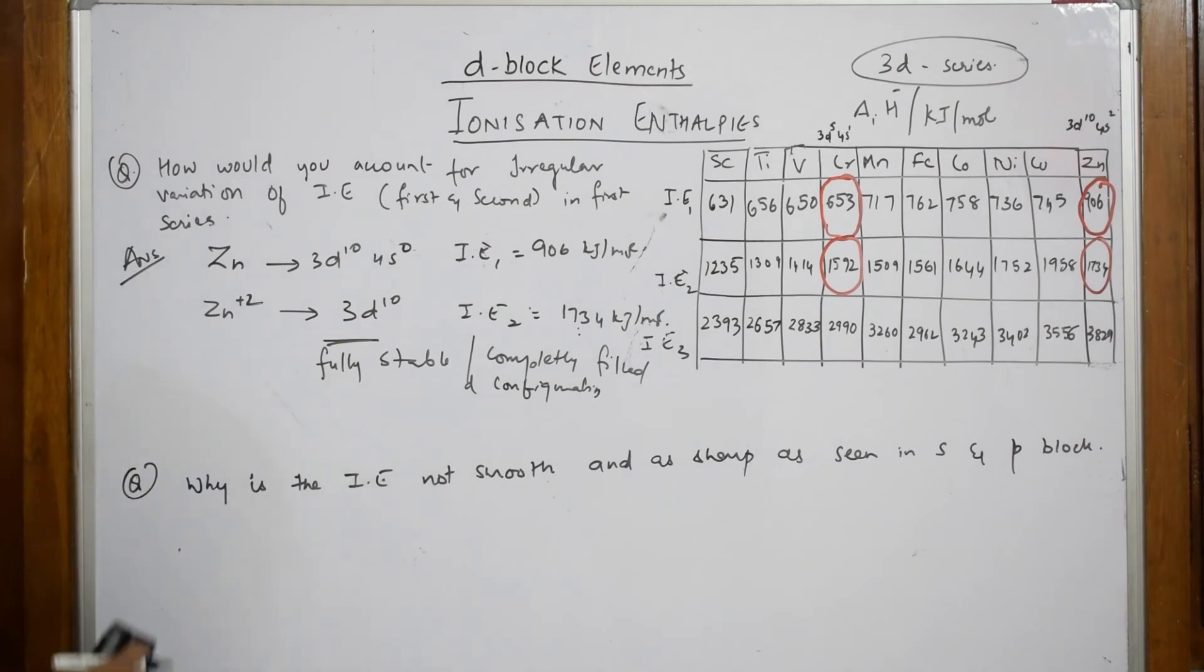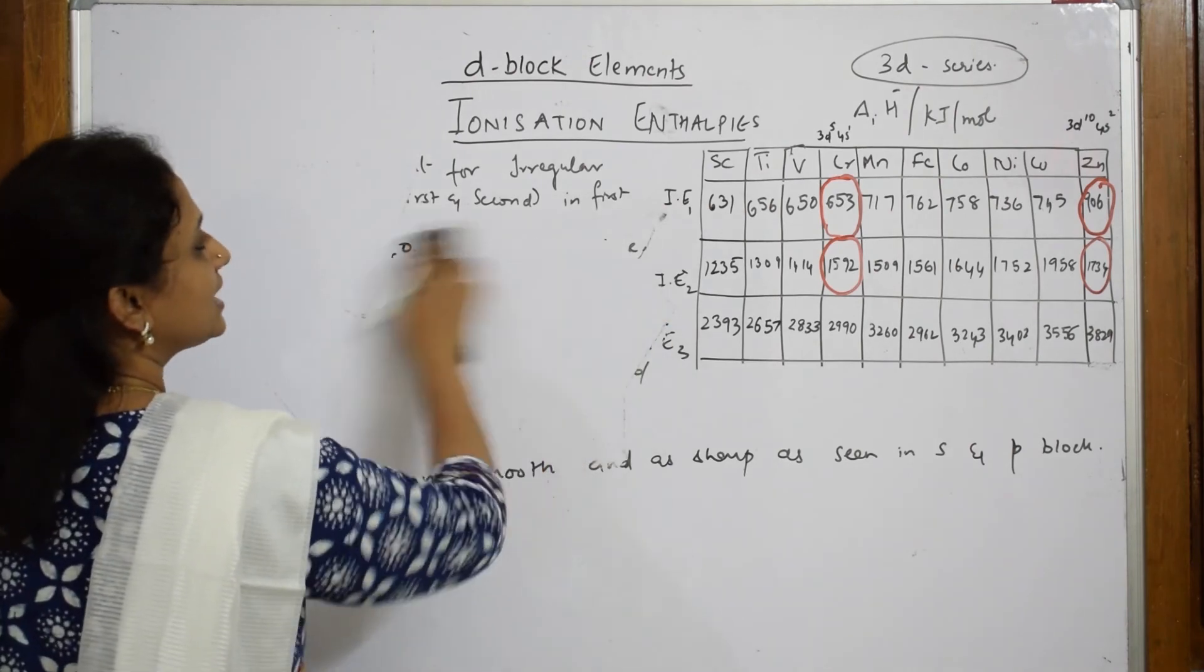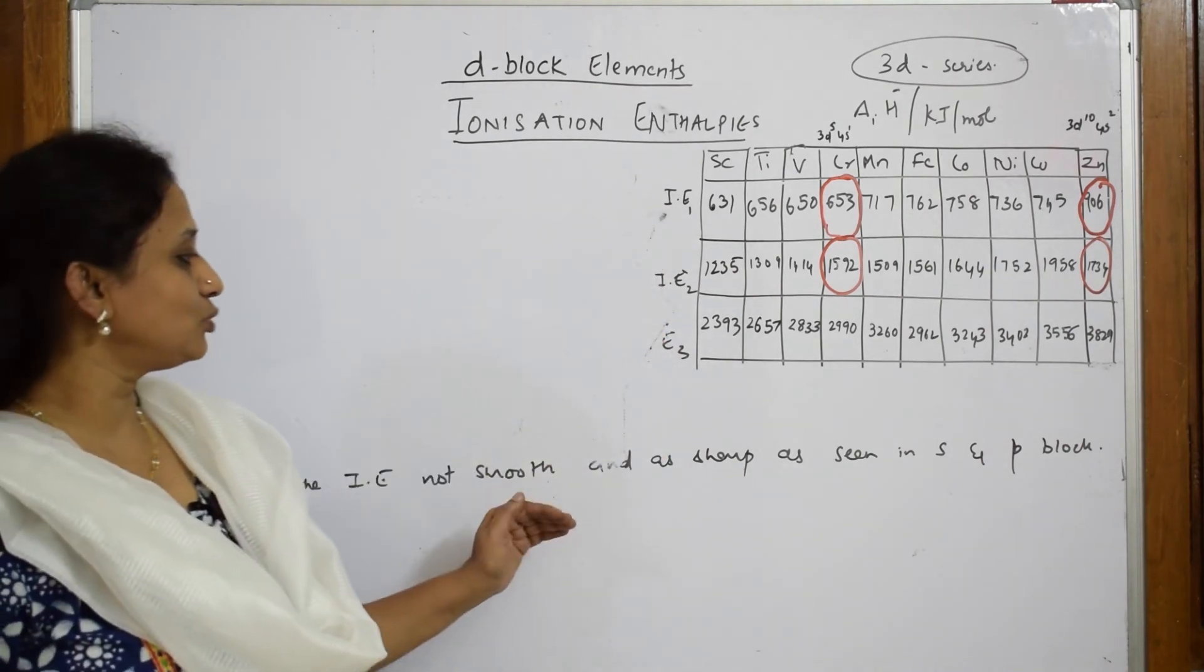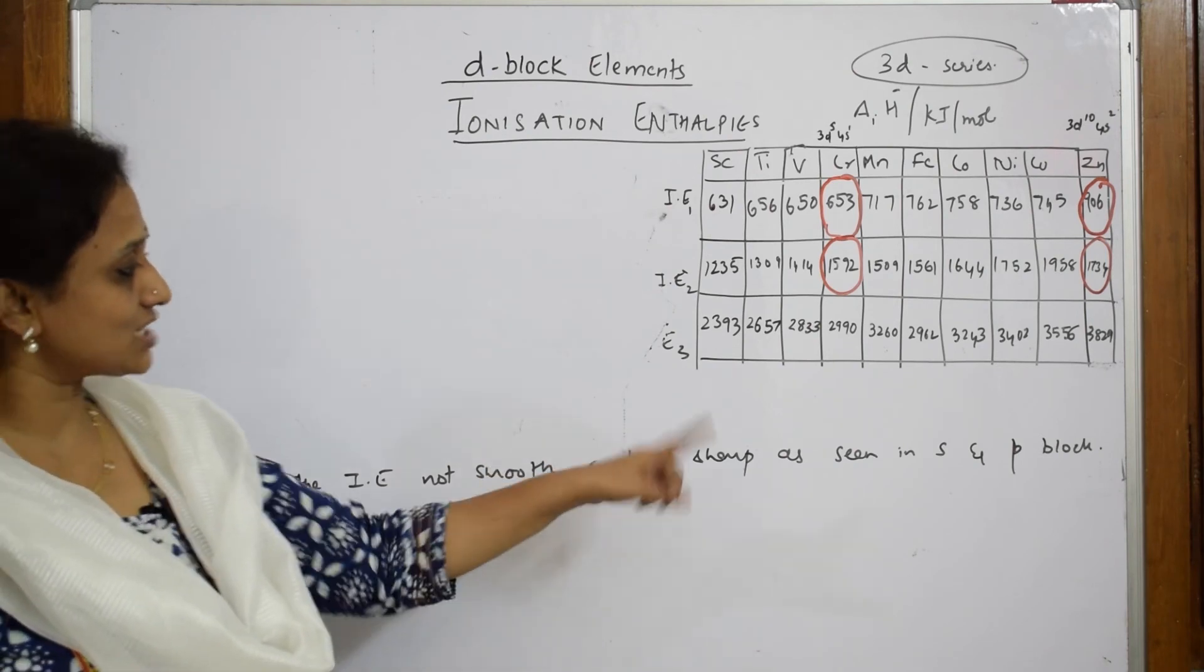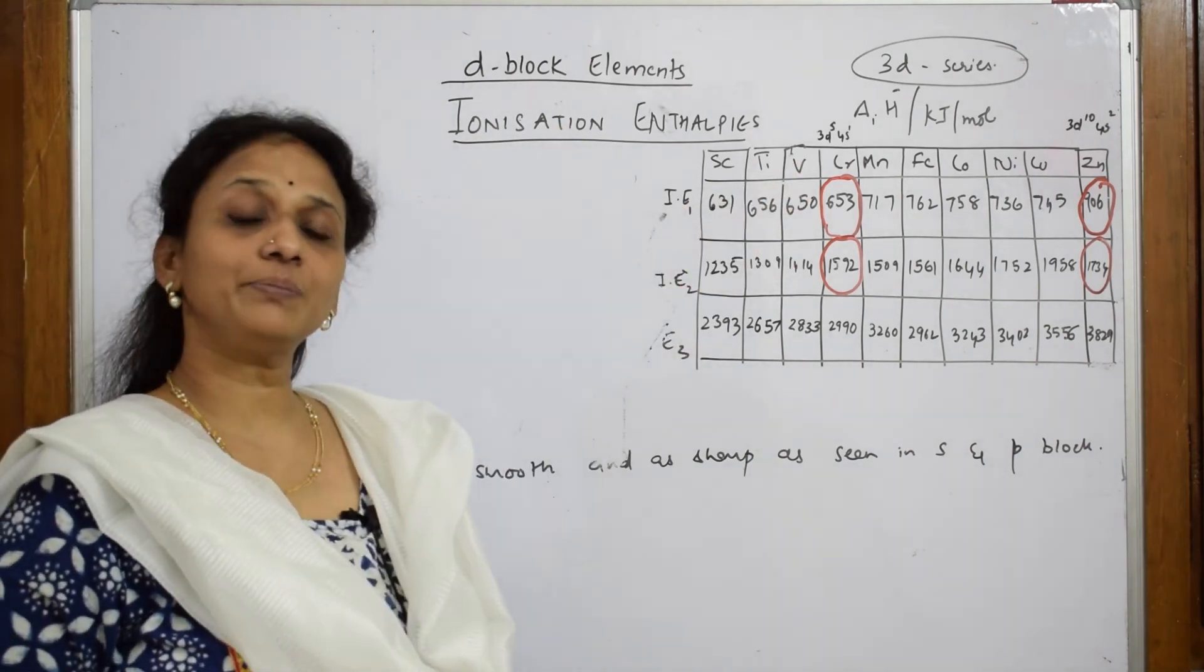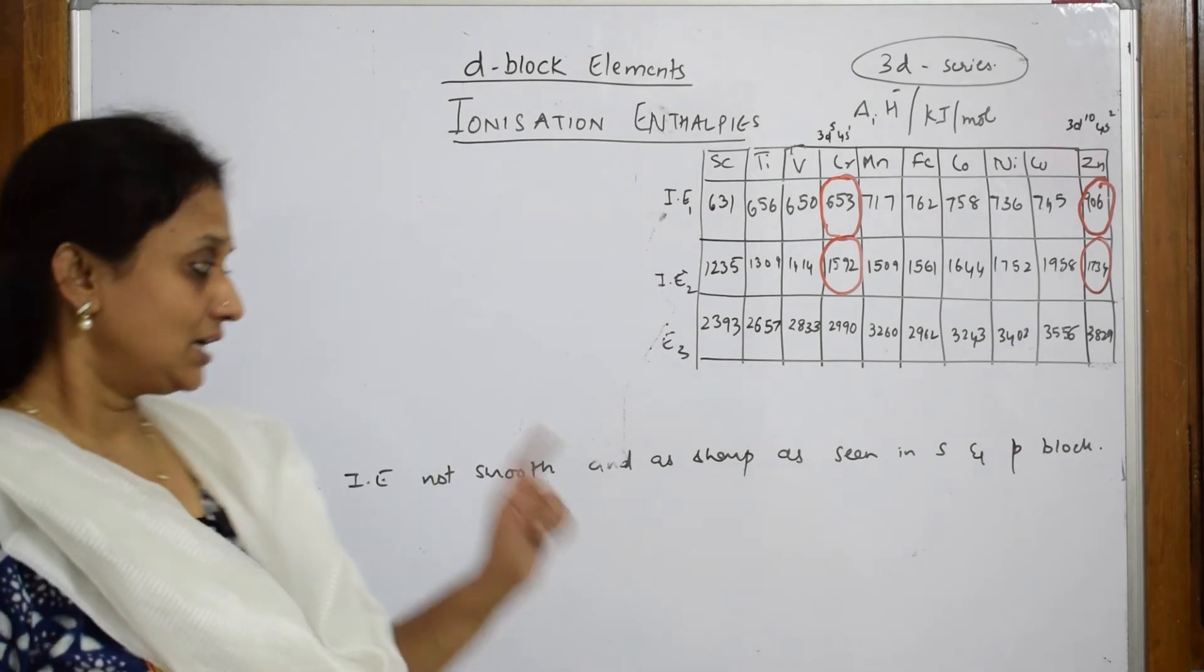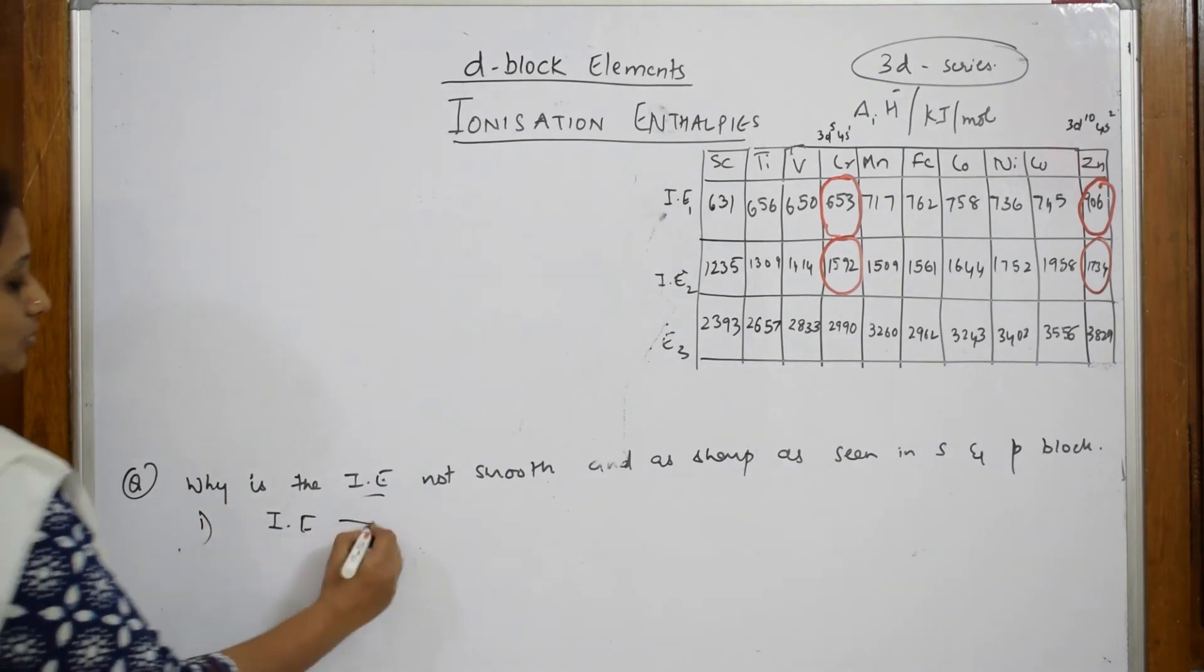Let us come back to this question. What does this question say? Why is ionization enthalpy not smooth and as sharp in s and p block elements? Now, they are comparing with the s block elements and p block elements. What happens when we study d block? The first important concept is ionization enthalpy depends upon nuclear charge. Nuclear charge indirectly depends upon atomic radii.